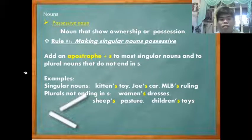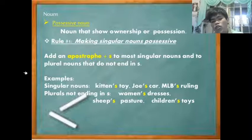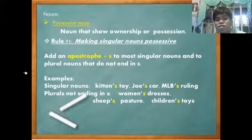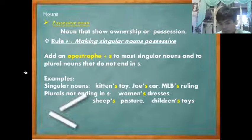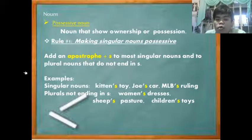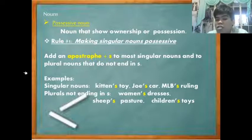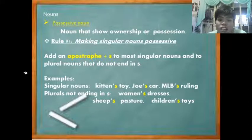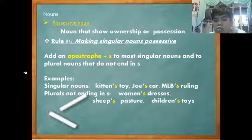Next are possessive nouns — nouns that show ownership of or power over another word. The first rule is making singular nouns possessive. Similar to how singular nouns form plurals with 's', for possessive nouns you add an apostrophe first, then 's'. For example: 'kitten' becomes 'kitten's'; 'Joe' becomes 'Joe's'. This shows ownership.